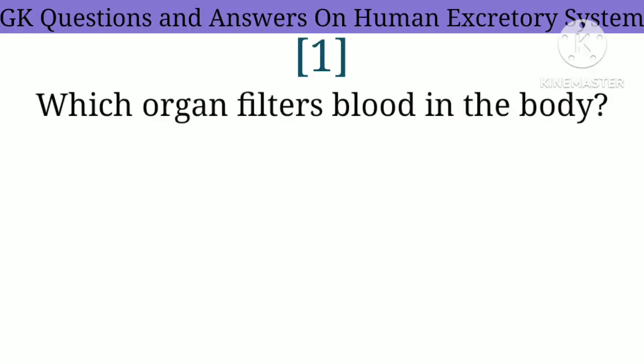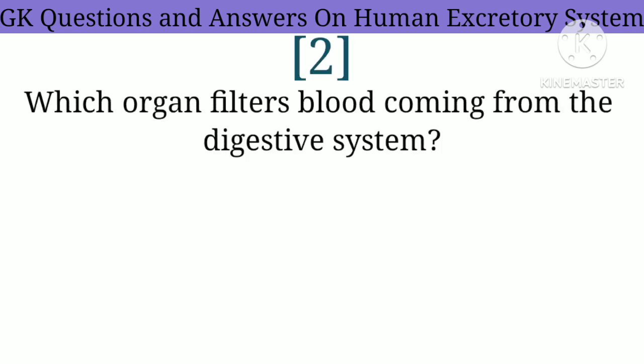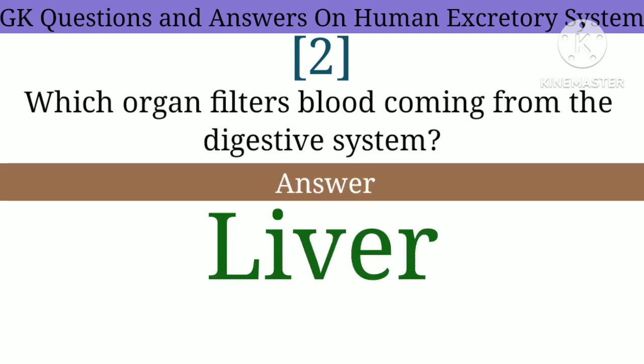Question 1: Which organ filters blood in the body? Answer: Kidney. Question 2: Which organ filters blood coming from the digestive system? Answer: Liver.